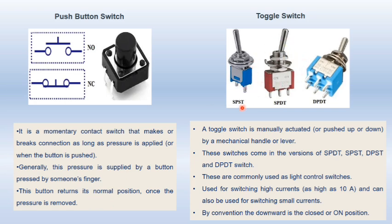Next, we have a toggle switch. They are also of many types: single pole single throw, single pole double throw, and double pole double throw. Here you can see we have a mechanical lever which you can manually turn on or off. These switches come in different versions as we have already seen. They are commonly used in light control switches and can be used for switching high current as high as 10 amperes, and can also be used for switching small currents. This type of switch is also seen in digital trainer kits, where they are available to switch a particular circuit to zero or one.